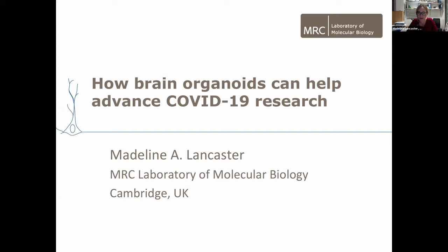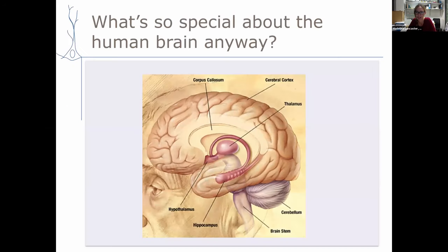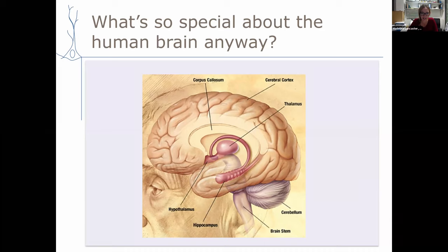I want to start by talking about brain organoids and what they are, and particularly what the brain organoids my lab uses are like, because they differ from lab to lab. Before I get into that, I want to talk about some of the really big questions my lab is interested in, and why we need brain organoids for them. One of the biggest questions in neuroscience is: what is it about our brains that makes us special — that gives us our special cognitive capability and really makes us who we are?